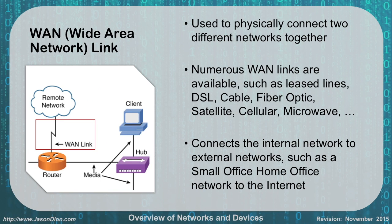The last piece is our Wide Area Network connection, or WAN link. WAN links are used to connect two different networks together via a physical link. Different WAN links include lease lines like T1 and T3 connections, DSL (Digital Subscriber Line), cable modems like Comcast and Time Warner, fiber optic like Verizon FiOS, satellite internet like HughesNet, cellular service from mobile phone providers, and microwave service that can go from building to building.